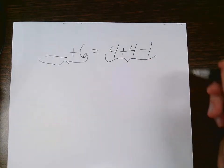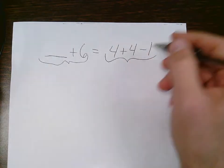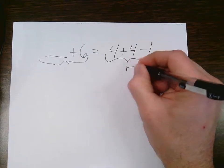I do know this side because there is nothing missing. 4 plus 4 is 8. 8 minus 1 is 7, so that side equals 7.